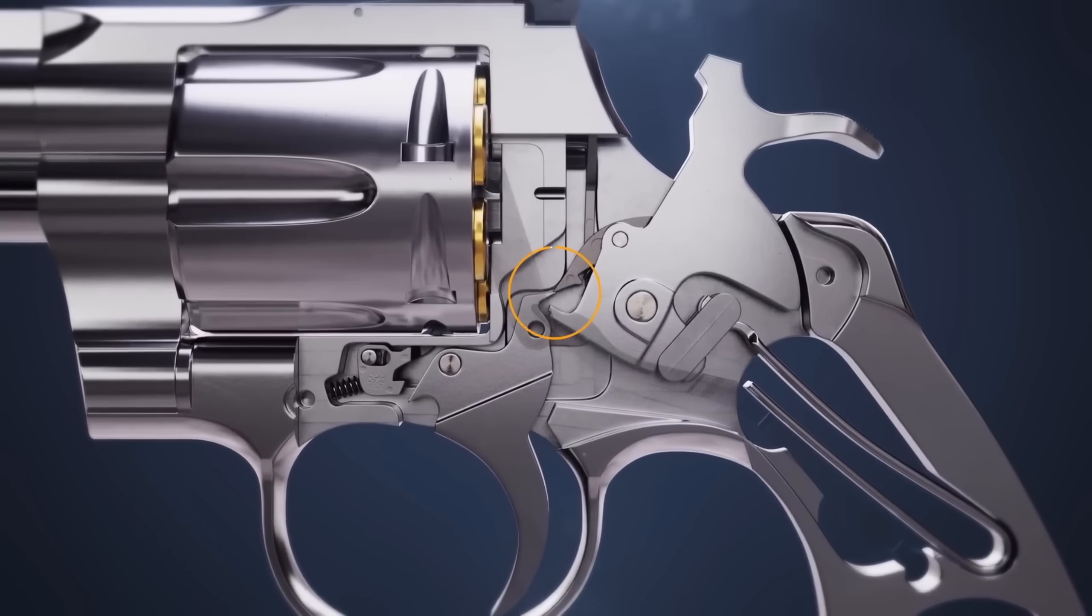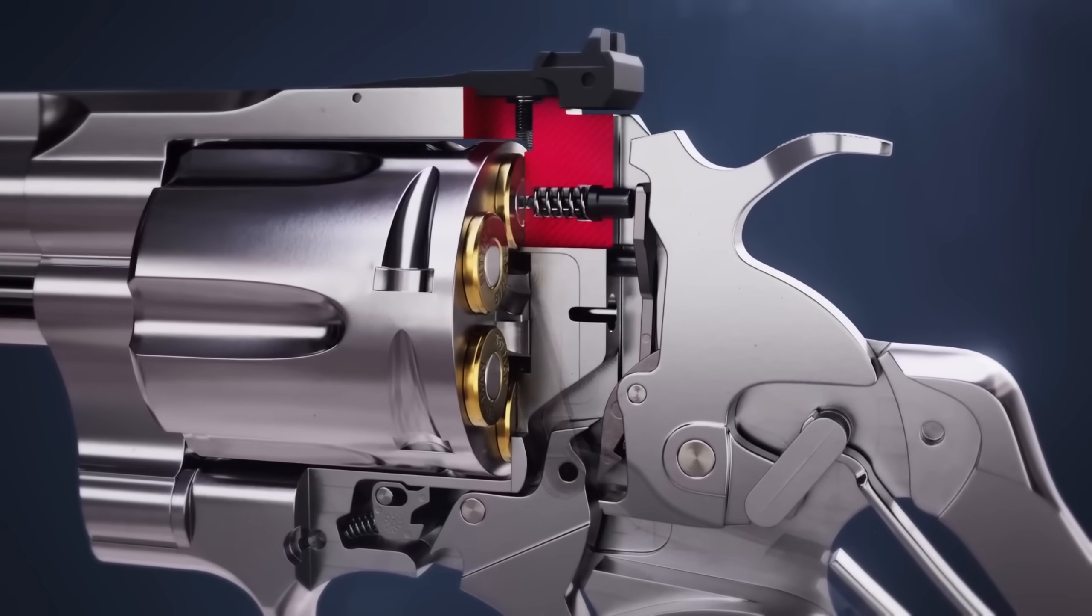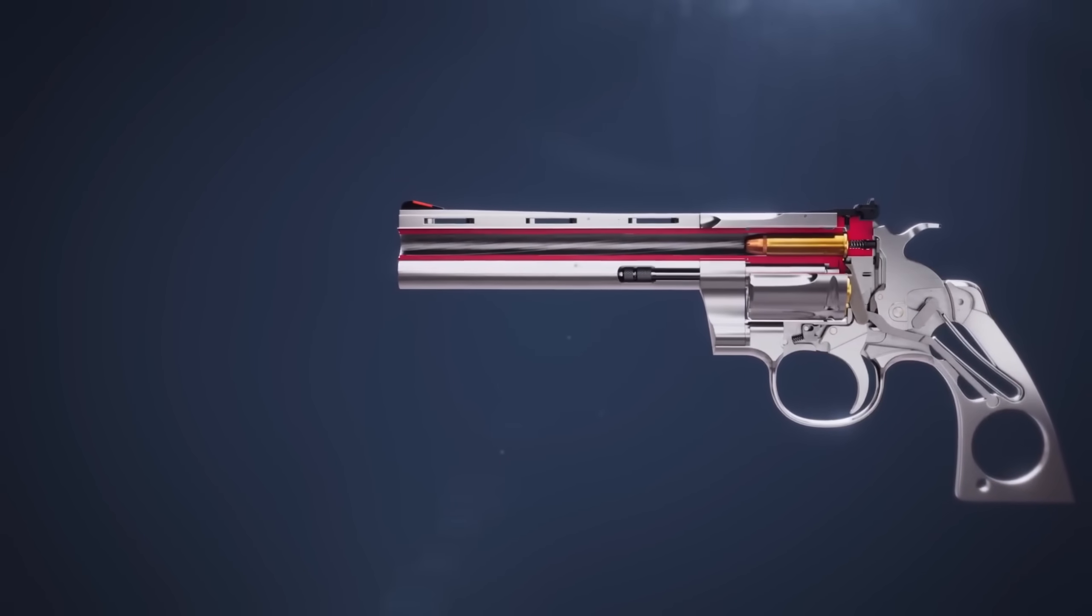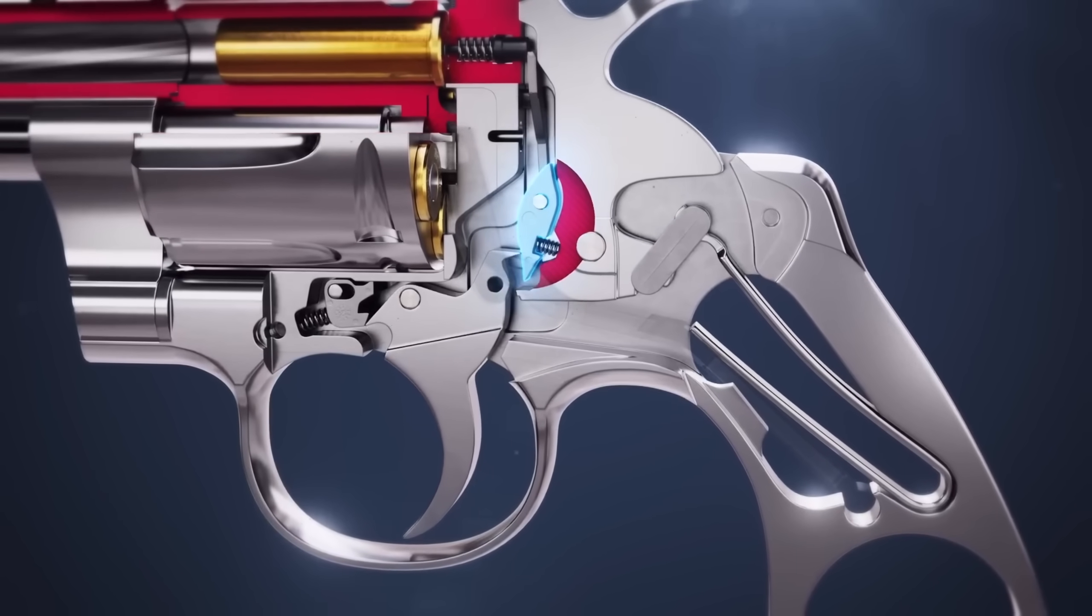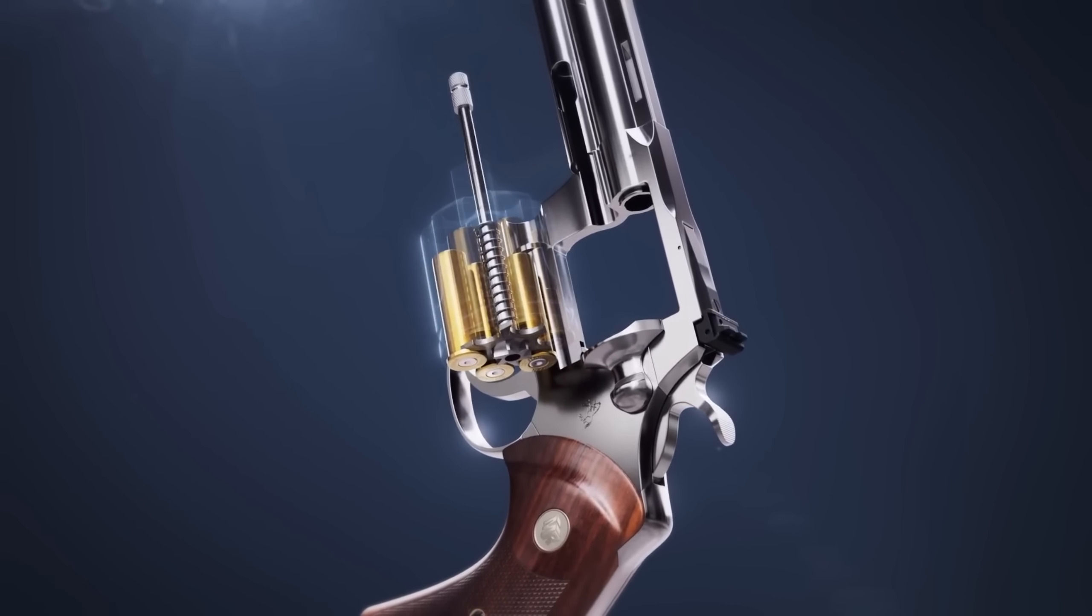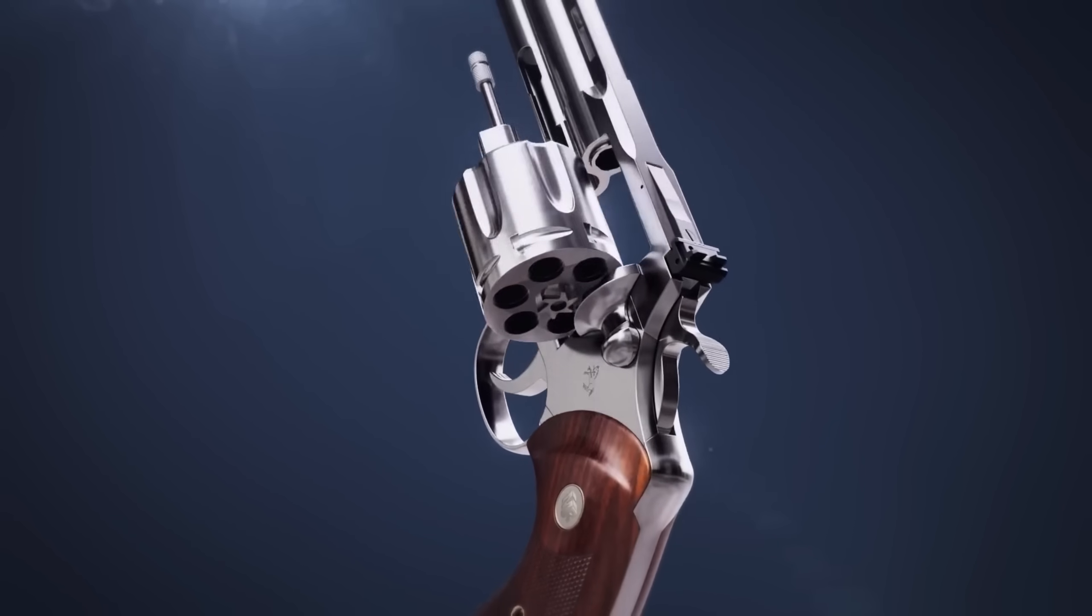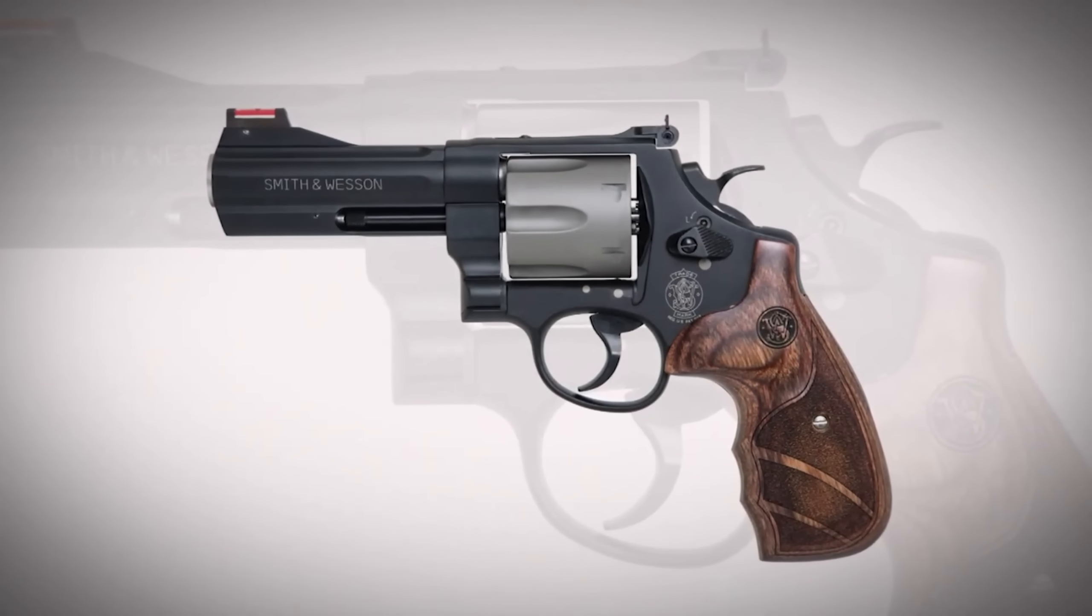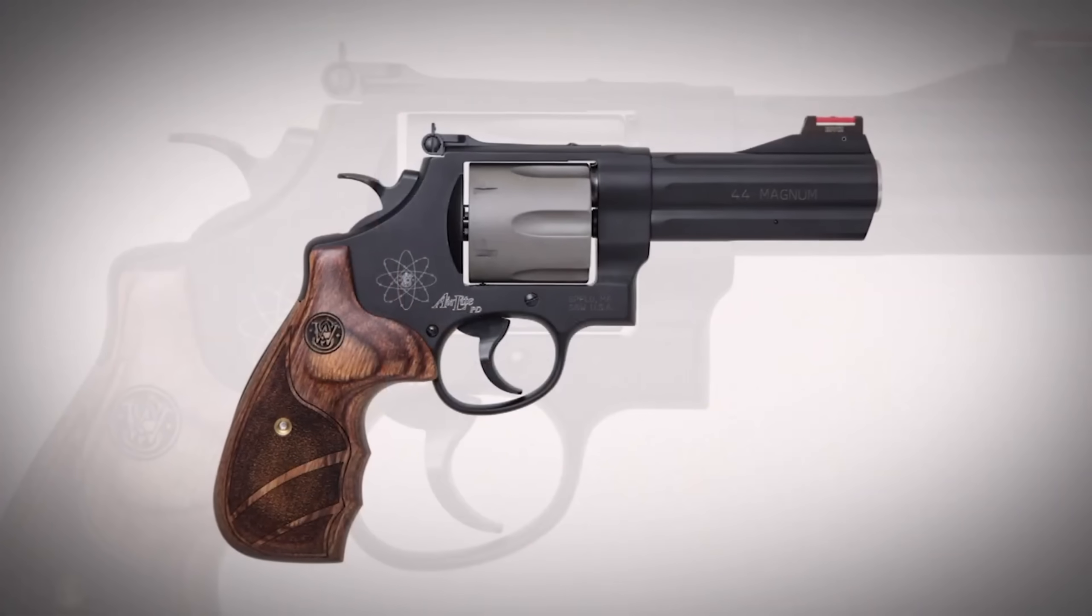With the barrel in place, attention turns to the cylinder. Technicians use alignment rods and bore scopes to confirm that cylinder chambers index correctly with the barrel. These tools allow them to check the precise relationship between each chamber and the bore, making sure that ammunition lines up perfectly for safe and reliable firing. If anything is even slightly off, adjustments are made before moving on. This focus on chamber alignment is a key part of making a revolver that fires smoothly and safely, round after round.